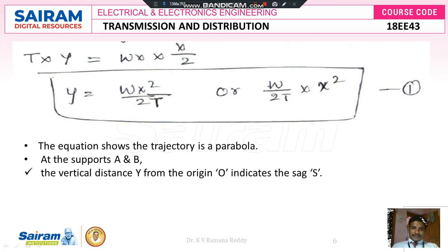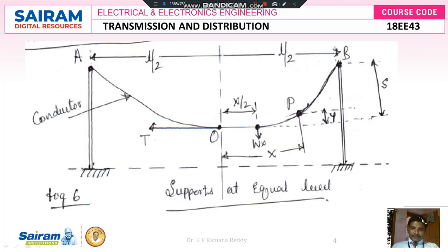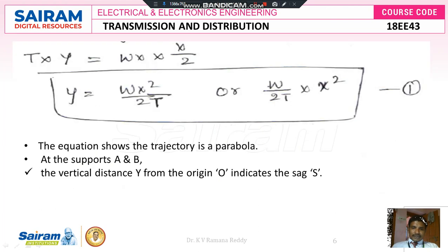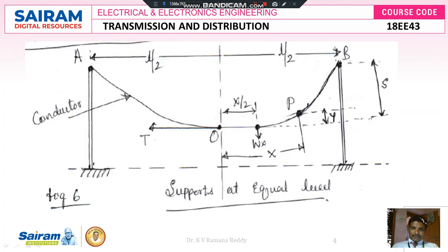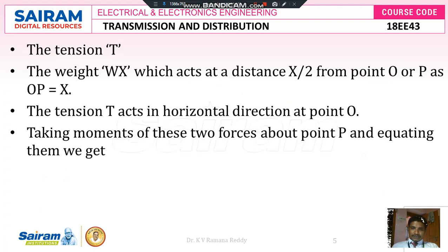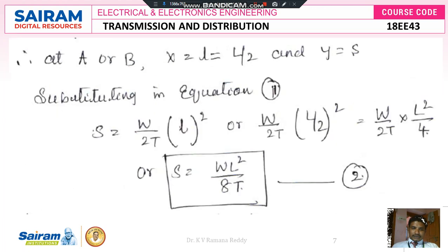If we send T to the right-hand side, then y = wx²/2T, or y = (w/2T) × x². This equation shows the trajectory is a parabola. At supports A and B, the vertical distance y from origin O indicates the sag S. Looking at the figure, the vertical distance from the center to point P is y, so we can replace y with S.